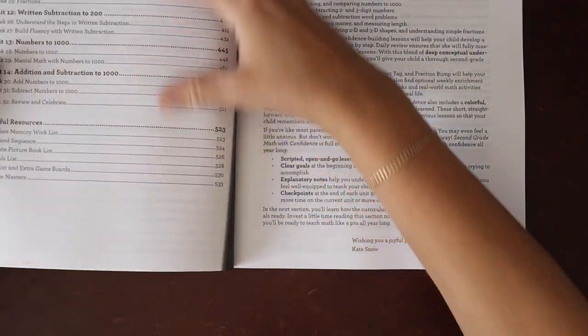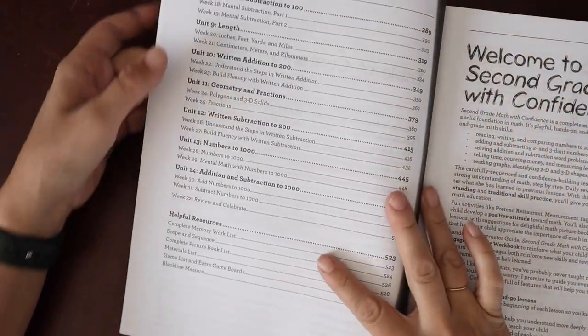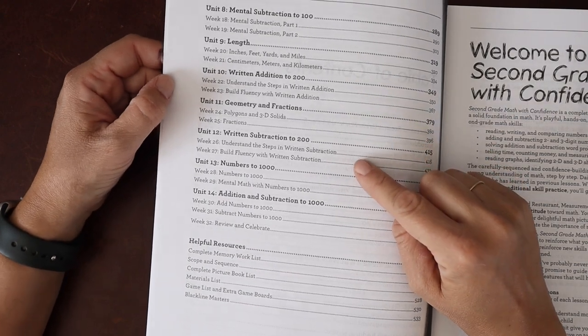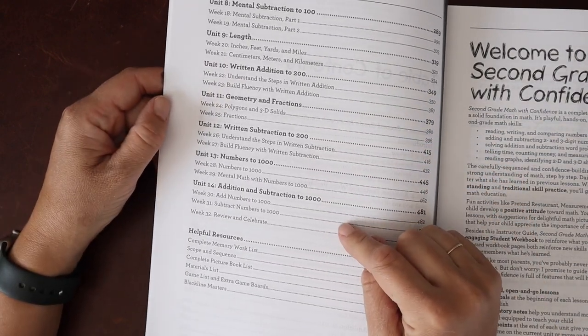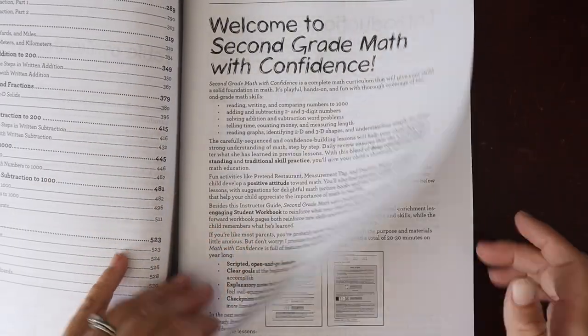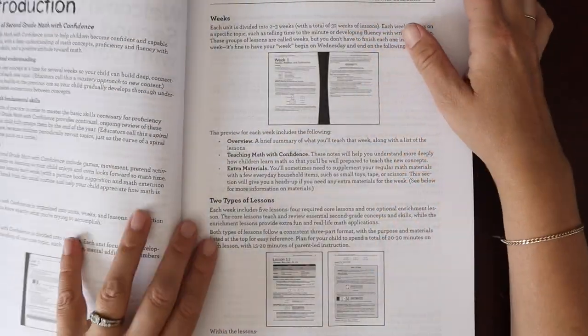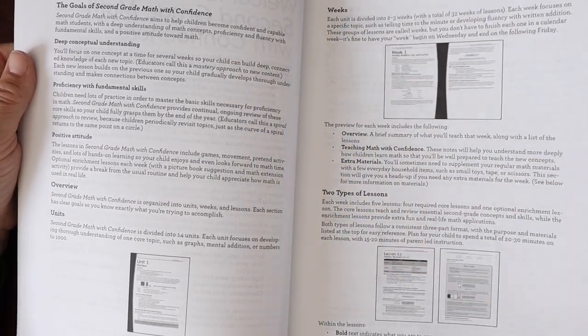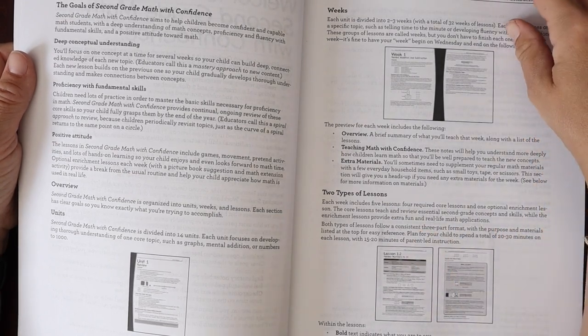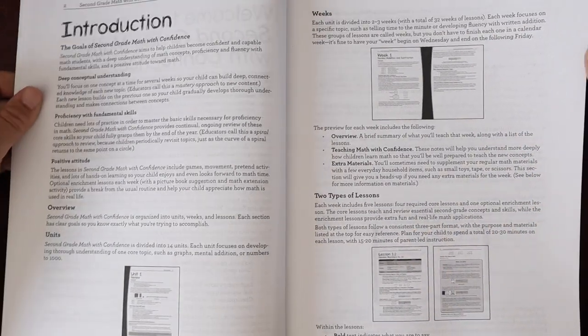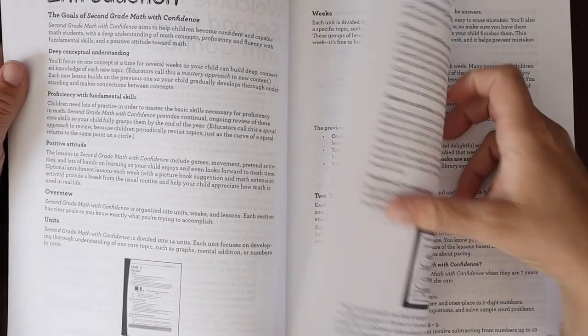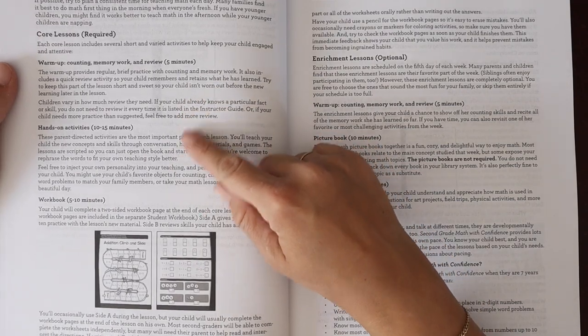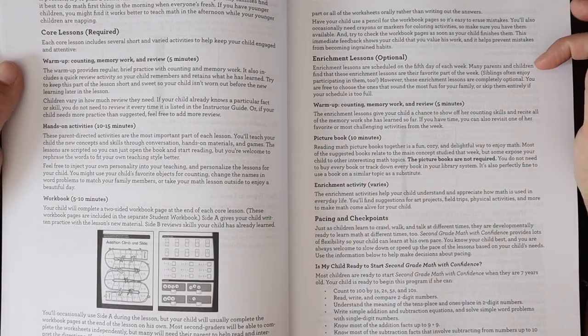Time, mental subtractions, we do addition and then subtraction, length, written addition, geometry and fractions, written subtraction, numbers to a thousand, and then addition and subtraction within a thousand. So let's keep going. There's a nice introduction that explains the breakdown here, the two different types of lessons that we have: four required lessons and one optional enrichment lesson. So if you do a four day school week, this is kind of already designed for that. We talk about the core lessons, the warm-up component, hands-on activity, workbook, enrichment.